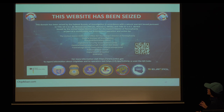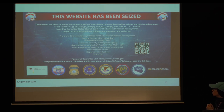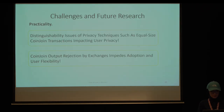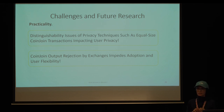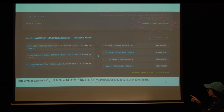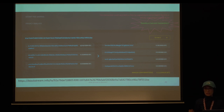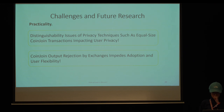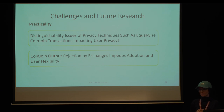Here is an example of a website seized by U.S. law enforcement — it was chipmixer.com. The second challenge is practicality: some privacy preserving techniques are distinguishable on the blockchain. For instance, CoinJoin transactions — if you go to blockstream.com and search for a CoinJoin transaction, it is flagged as CoinJoin. So if someone uses CoinJoin to enhance their privacy, they are flagged by monitoring tools, and some exchanges do not accept coins coming from CoinJoin transactions, which may cause problems when using these techniques.